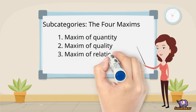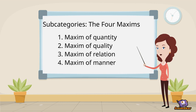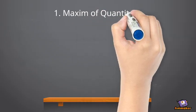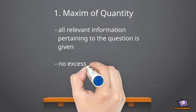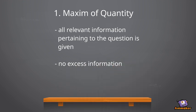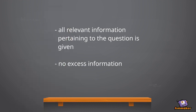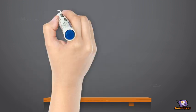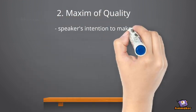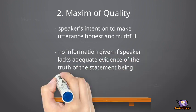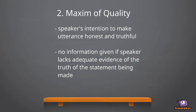There is the maxim of quantity, quality, relation, and manner. The first maxim, quantity, makes sure that all the relevant information according to the question is given — not too much, but just the right amount of information. Next, there is the maxim of quality. In this case, it's the speaker's intention to make the answer honest and truthful.